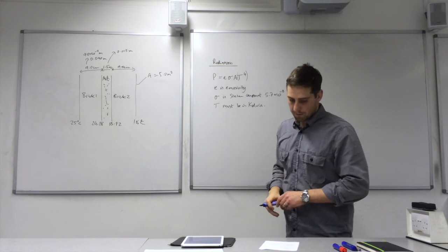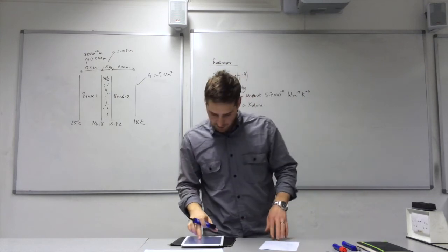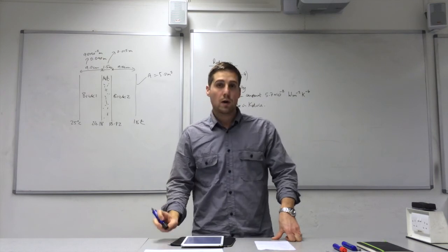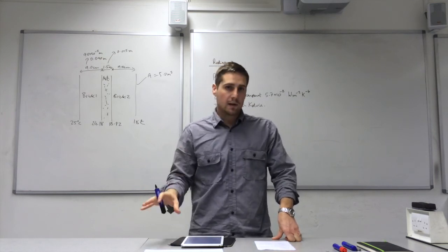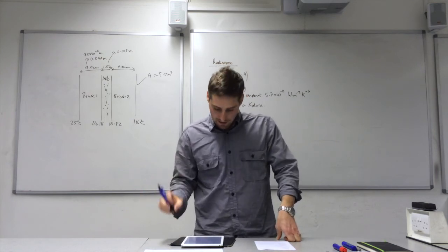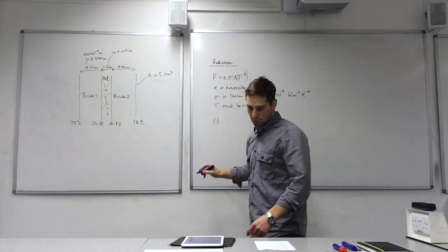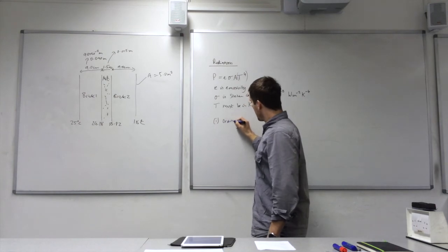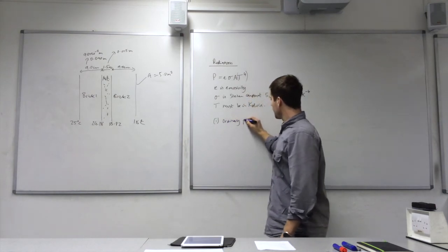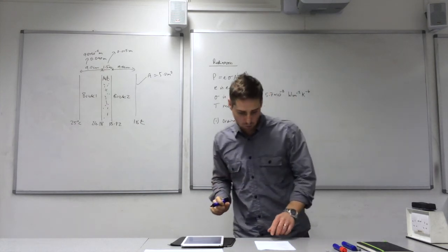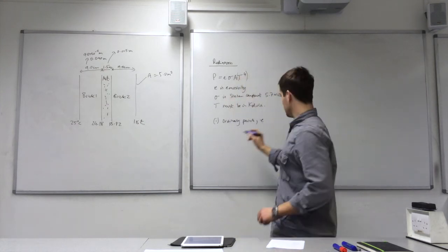Okay, we're going to calculate the rate of heat transfer by radiation through a 5 square meter wall, where the internal temperature is 18 degrees C. And question 1 is for ordinary paint on the wall, which has an emissivity value of 0.92.